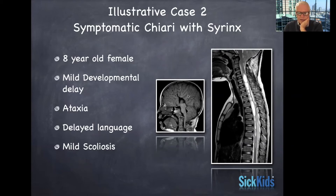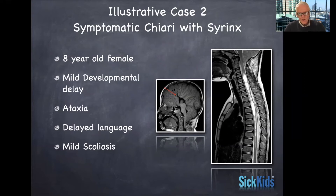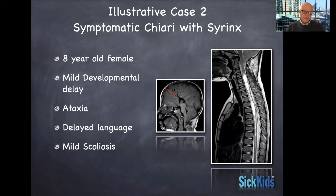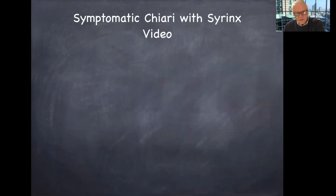But what are we missing here? The arrow is pointing at absence of the corpus callosum. This patient also has some underlying genetic disturbance that led to absence of the corpus callosum — the major association fiber bundle that takes information from one hemisphere and transfers it to the other.